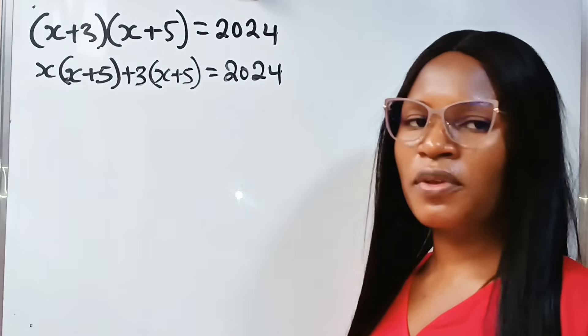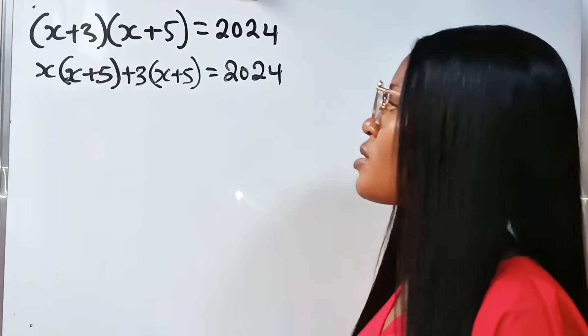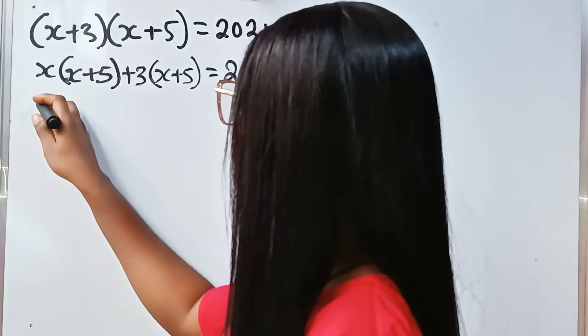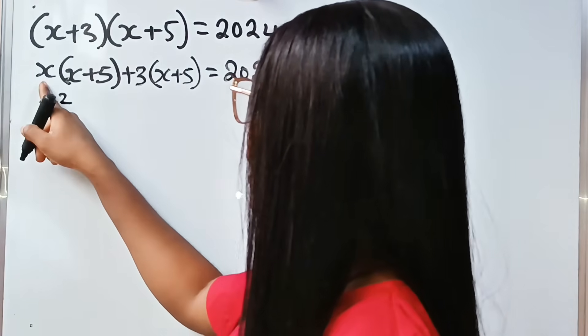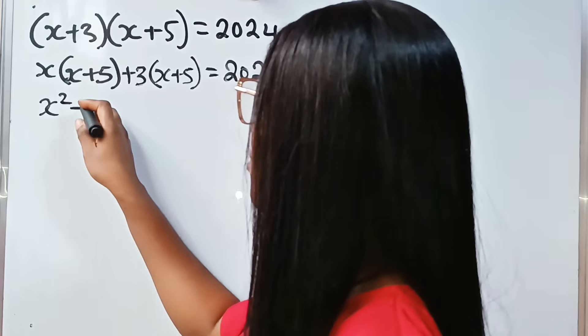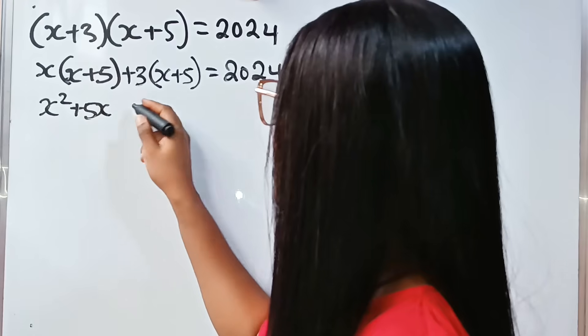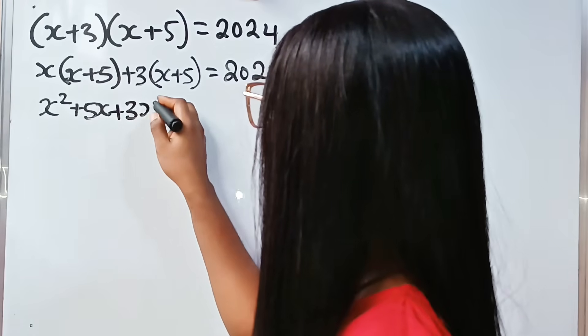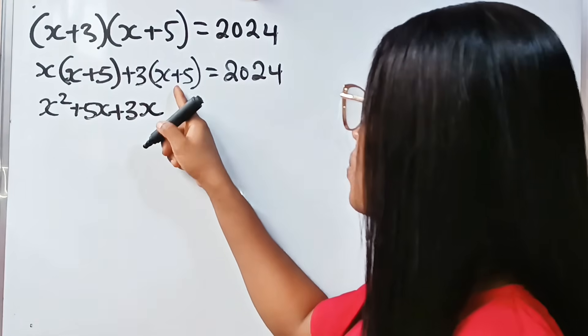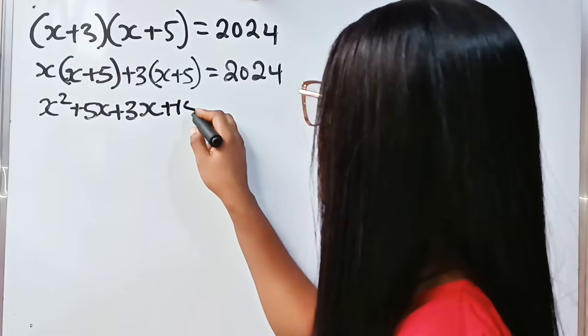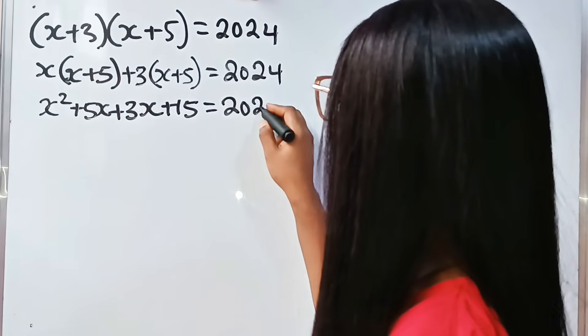If we expand further, we have x times x, which is x², x times 5 gives us 5x, plus 3 times x gives 3x, plus 3 times 5 gives 15, equals 2024.